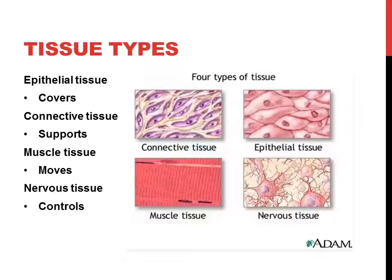Here we have the four tissue types in the human body. Believe it or not, every organ and every part of the body is made up of some combination of these four tissues. A lot of these tissues have many subtypes, but when it comes down to it, every tissue in the body can be broken down into one of these four types.